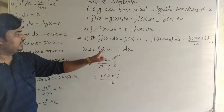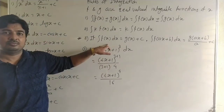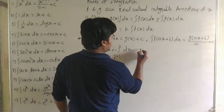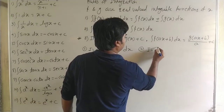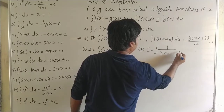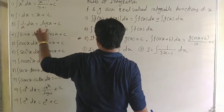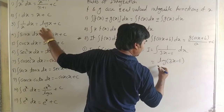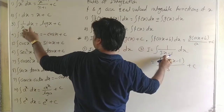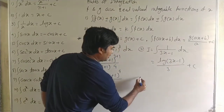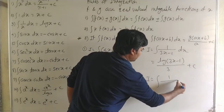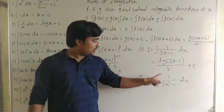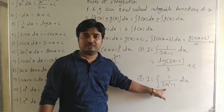So the answer is (4x + 1)⁴ / (4 × 4) = (4x + 1)⁴ / 16 + C. Differentiating this gives back (4x + 1)³. Second example: integral of 1/(3x − 1) dx. We know integral of 1/x is log|x|, so this gives (1/3) log|3x − 1| + C, dividing by the coefficient 3.